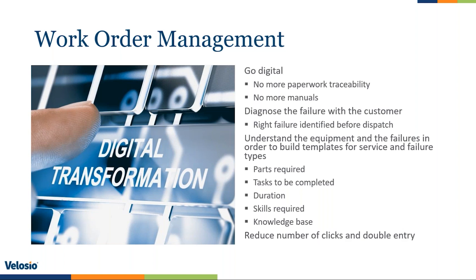The next item is work order management. Number one: go digital — less paperwork, no more paperwork, full traceability so you don't have to worry about losing paperwork or paperwork being completed improperly. No more physical manuals — back when I was a technician, I used to have to carry manuals for every piece of equipment and lug those things around. If you go digital, you don't have to do that anymore. Another item: diagnose the failure with the customer. A lot of times customers call in saying there's a problem without really understanding what it is, and you dispatch a technician only to find the wrong skill set was sent.